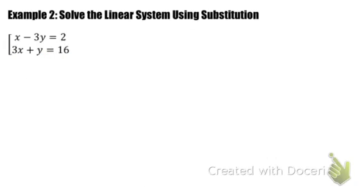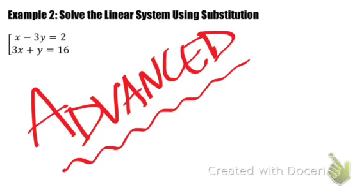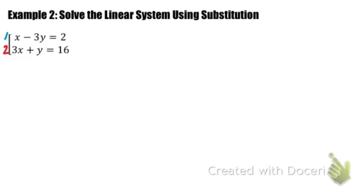So the second example, solve the linear system using substitution, is a little bit more advanced than the previous example. Now what I suggest that you try doing is try the example on your own, see why it's advanced, and then if you need to, continue the video on after pausing it and see what my solution is.